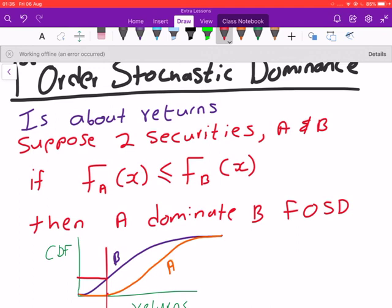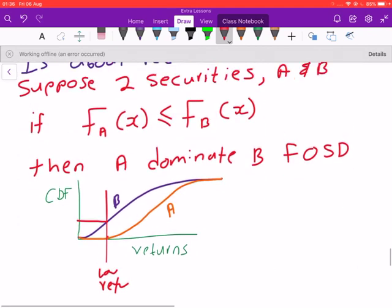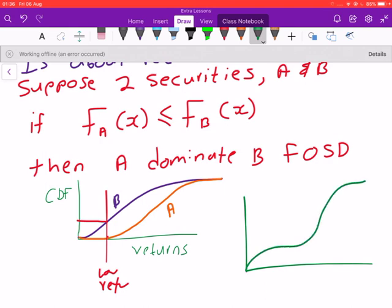If you have something like this, if you have something like this, how do you make these decisions from here? If something is like this, then we will have to use second-order stochastic dominance.